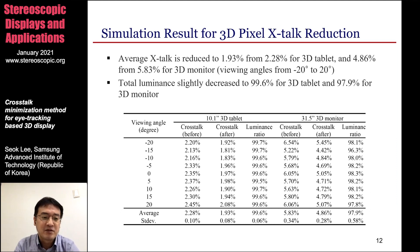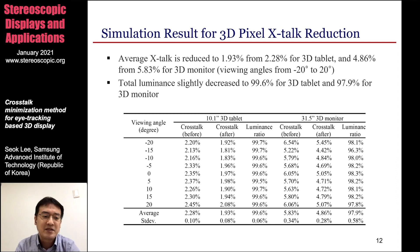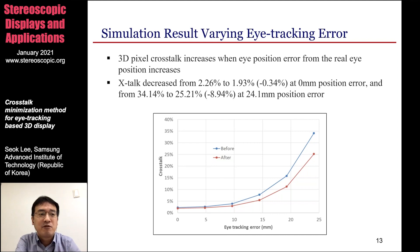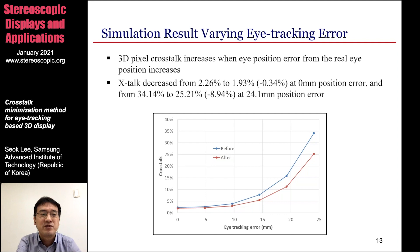We also measured the total luminance for each case, and it is slightly decreased to 99.6% for the 3D tablet and 97.9% for the 3D monitor, which means that the luminance is almost maintained after applying the proposed crosstalk reduction method. This is the crosstalk simulation result of the 10.1-inch 3D tablet varying the eye tracking error. You can see that the crosstalk increases when the eye position error increases. We found that the proposed method is still effective for reducing crosstalk when the eye tracking error is increasing.